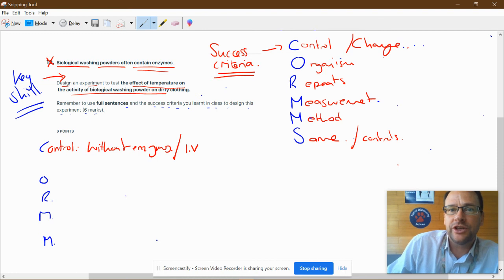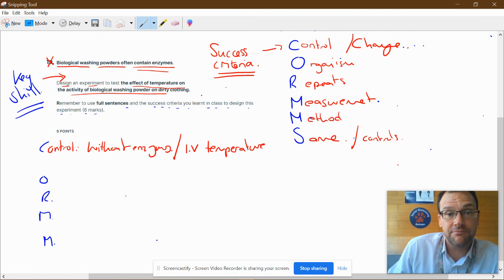We're actually changing, because it could be control or change, the independent variable is the temperature. I'm going to do 0, 20, 40, 60 degrees, 80 degrees. Those are the temperatures I'm going to test.